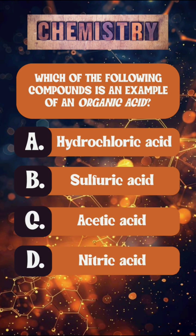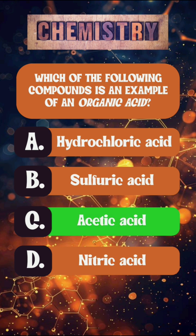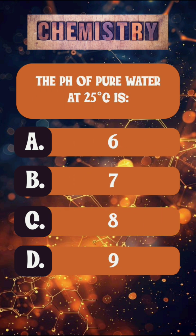Question one: which of the following compounds is an example of an organic acid? The right answer is option C, acetic acid.